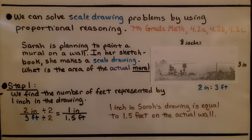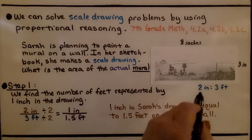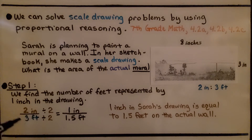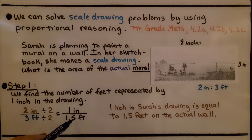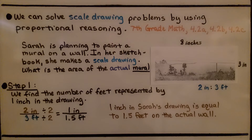For step one, we find the number of feet represented by one inch in the drawing. The scale is 2 inches to 3 feet. We divide both sides by 2, and get 1 inch to 1.5 feet. That means one inch in Sarah's drawing equals one and a half feet on the actual wall mural.